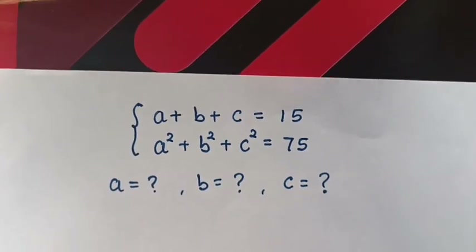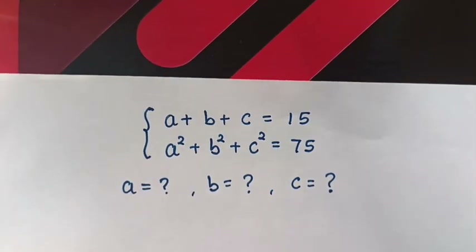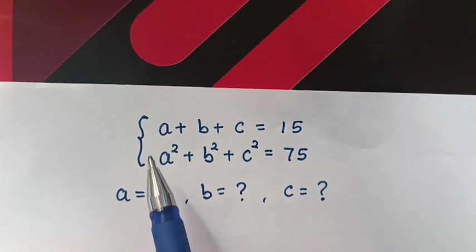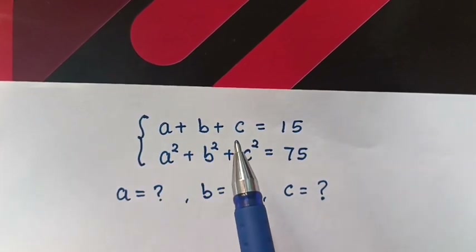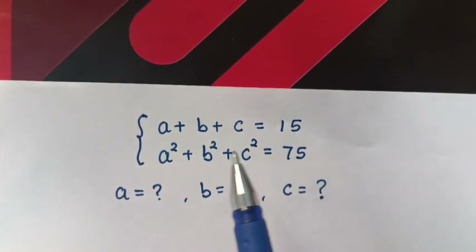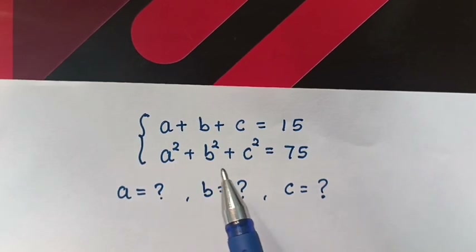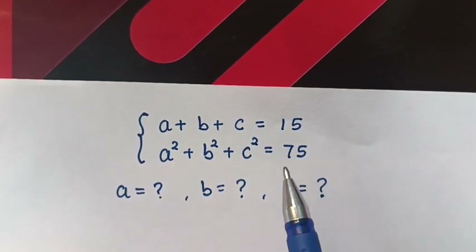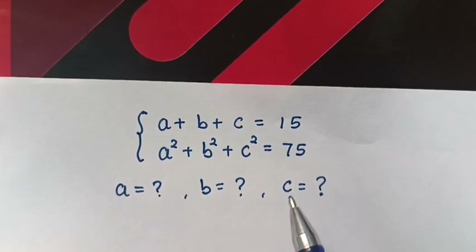How to solve this system of equations with three variables: a plus b plus c is equals to 15, a squared plus b squared plus c squared is equals to 75. Find the value of a, b, and c.